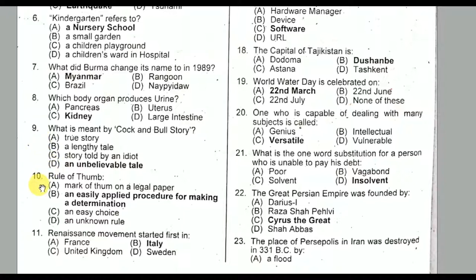Question number ten: Rule of thumb is an easily applied procedure for making a determination. Option B is the correct option.